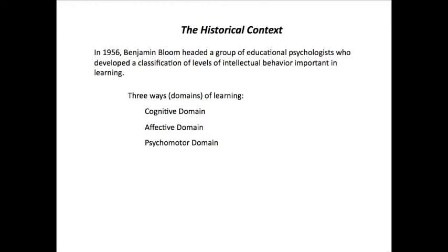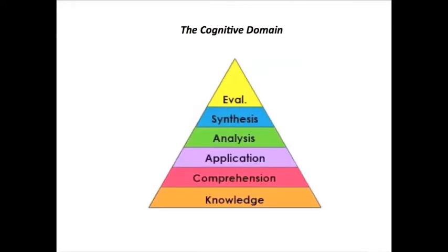What we're going to look at very briefly is the cognitive domain. Isn't this a beautiful little pyramid — I just love the color scheme. What it implies is that there are ways of learning within the cognitive domain which build upon each other, moving from the simplest to the most complex way of knowing something.